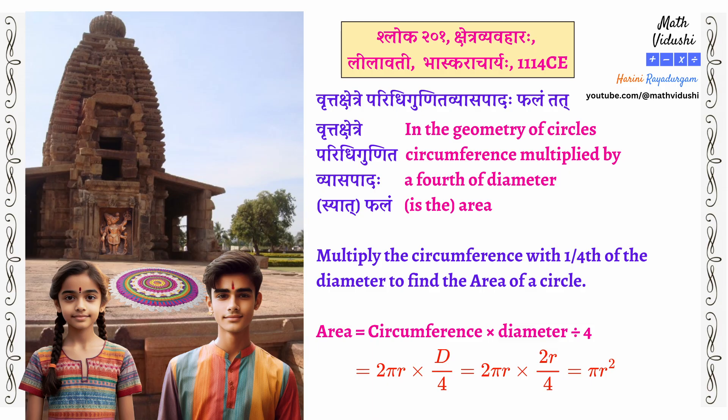Now we want the area of the circle — it is the space inside it. In Leelavati, Bhaskaracharya says: Vrittakshetre Paridhi Gunita Vyasa Padha Falam Tati. In the geometry of circles, circumference multiplied by a fourth of the diameter is the area. It says: multiply the circumference with one-fourth of the diameter. Therefore, area of a circle = circumference × diameter ÷ 4 = 2πr × d/4 = 2πr × 2r/4 = πr².